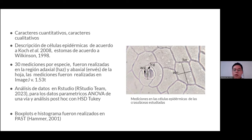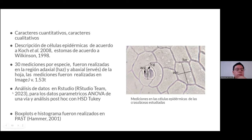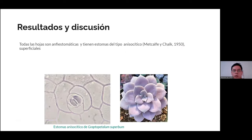Aquí del lado derecho les muestro un ejemplo de las imágenes y los caracteres que se midieron. Algunos de ellos fueron el ancho de las células guarda (ACG), el largo de las células guarda (LSG). Del lado derecho hay una célula epidérmica donde se midió el largo de la célula epidérmica o su ancho. Posteriormente los datos se analizaron en RStudio; se analizaron los datos paramétricos a través de un ANOVA de una vía y un análisis post-hoc con la prueba honesta significativa de Tukey. Además, se elaboraron algunos boxplots e histogramas en el programa PAST.